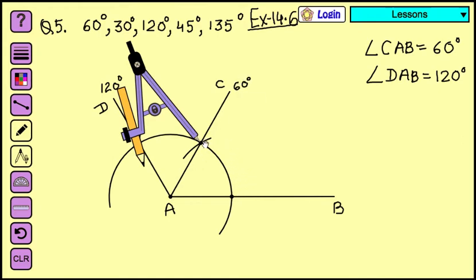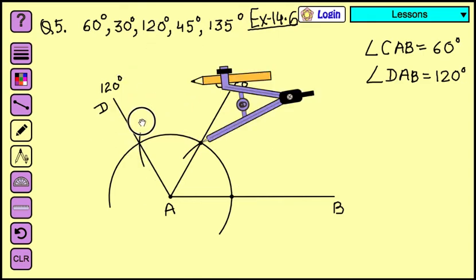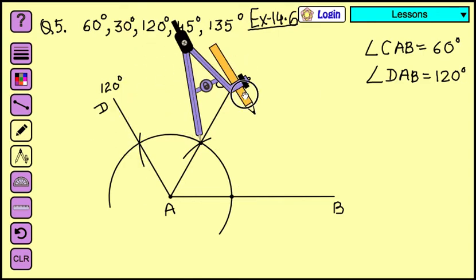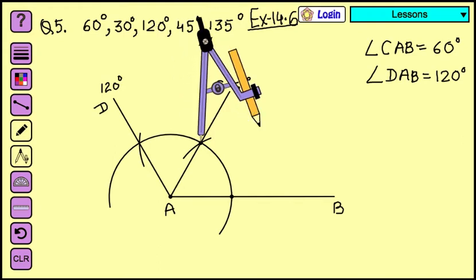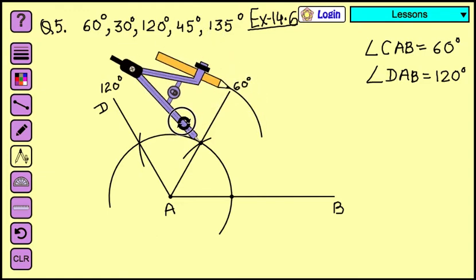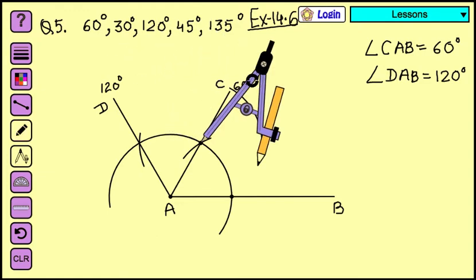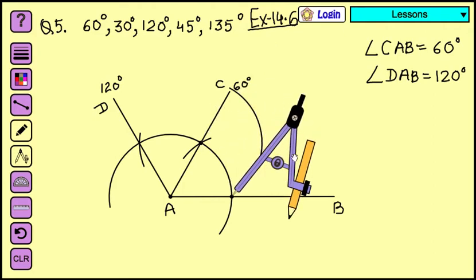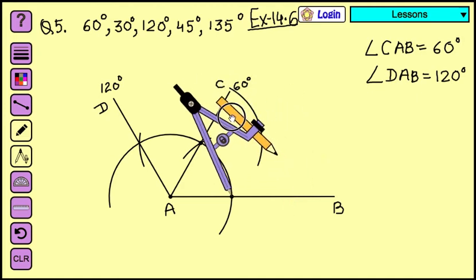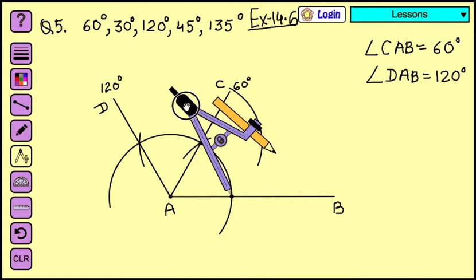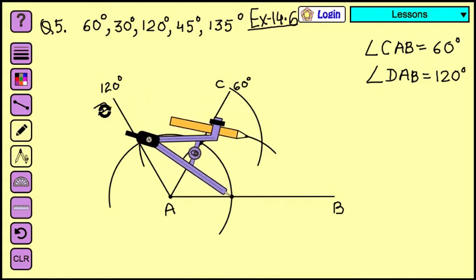These are the two points from where we are going to draw the arcs. So from here, let's move the pencil along over the other side. Okay, let's make an arc. Okay. Now place this one needle on the other side and we'll draw another arc which is going to cut the previous one. Okay.